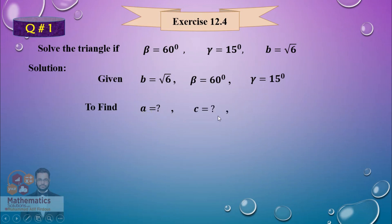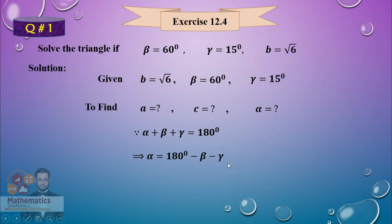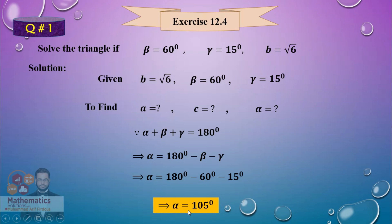We need to find the third angle. The sum of the angles of a triangle is equal to 180°. So alpha + beta + gamma = 180°, and from here alpha = 180° − beta − gamma. Beta is 60° and gamma is 15°, so the required angle alpha is equal to 105°.